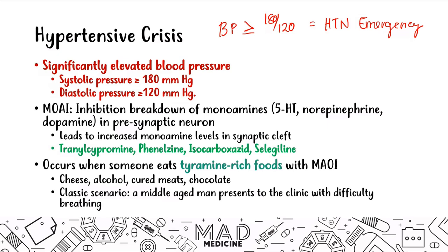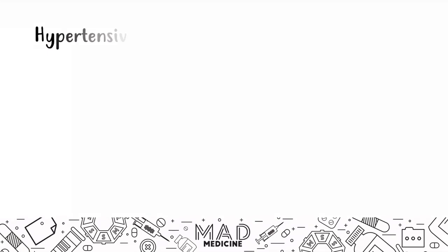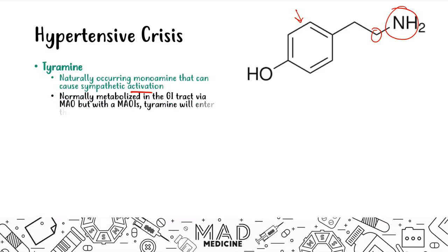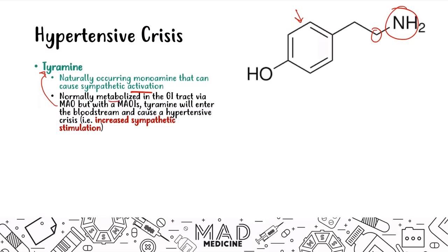This happens because of tyramine's chemical structure. Tyramine is a naturally occurring monoamine — it has one amine group attached to one R group and a cyclical ring structure, just like the other monoamines. Because tyramine is a naturally occurring monoamine, it can lead to sympathetic activation. Normally, tyramine in food is metabolized in the GI tract by monoamine oxidase. But when you're taking an MAOI, tyramine is not metabolized — it enters the bloodstream and leads to increased sympathetic stimulation.